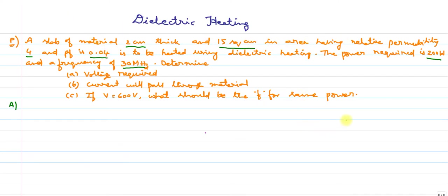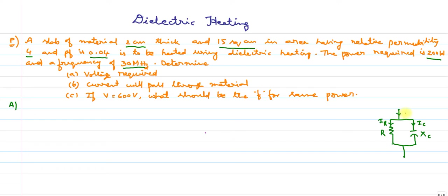For dielectric heating, we model the material as a parallel combination of resistance and capacitance. This is a resistance, this is reactance Xc. The current passing through the resistance is Iᵣ and through the capacitance is Ic, giving a total current I. Since both are in parallel, the voltage across them is the same.